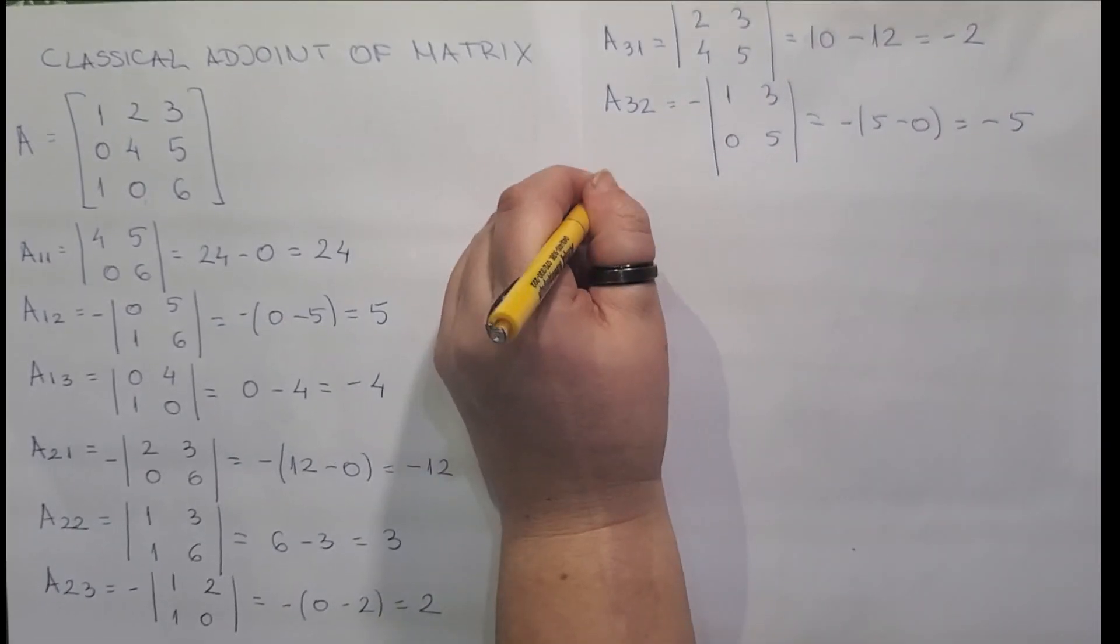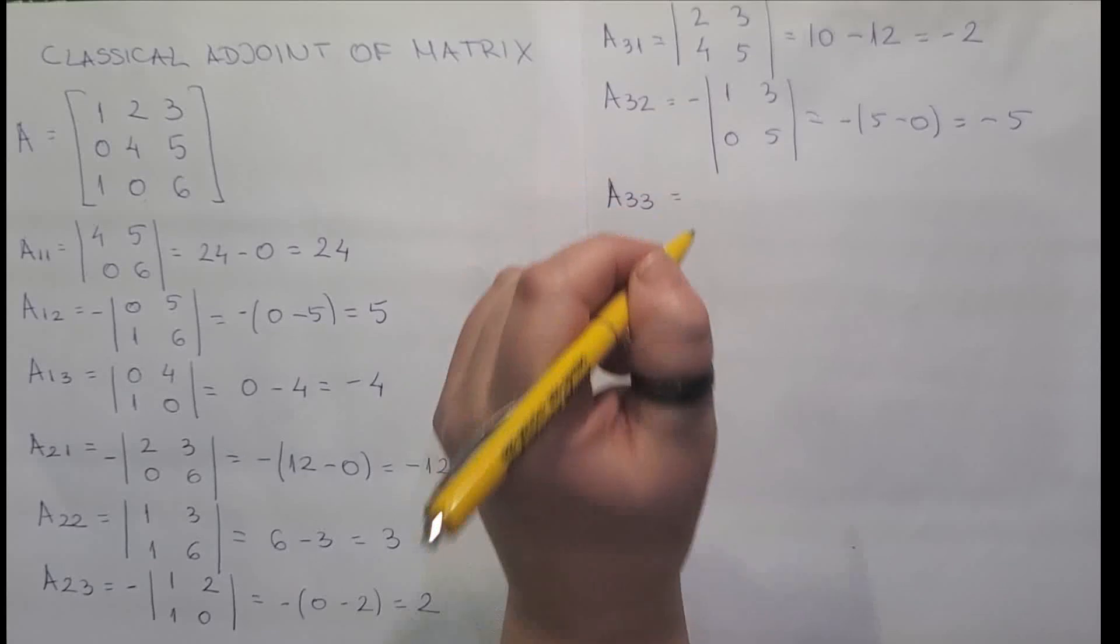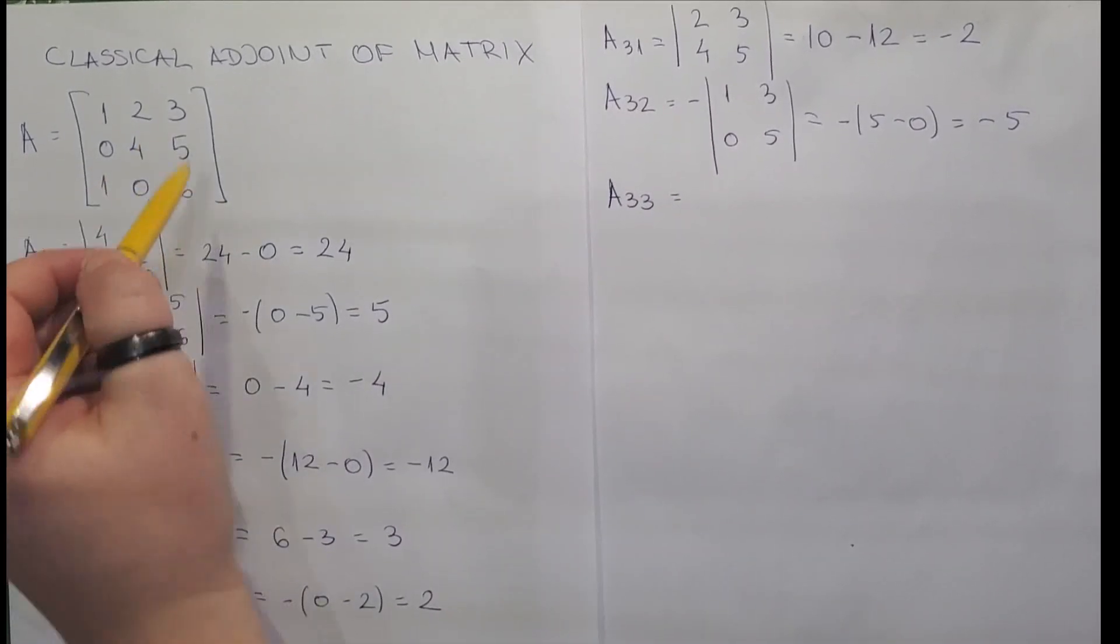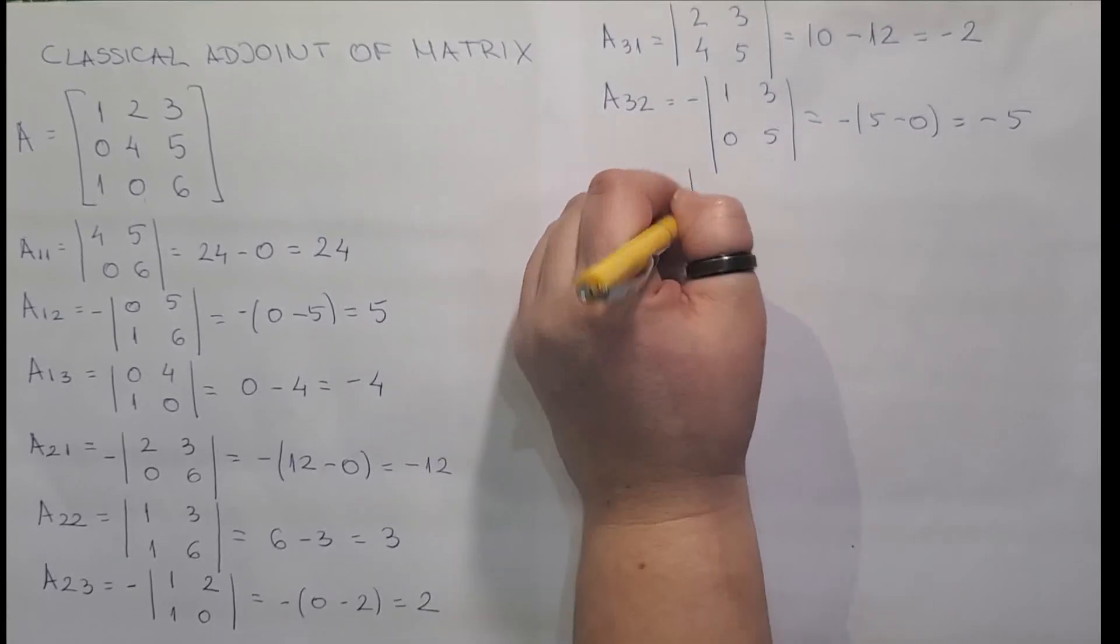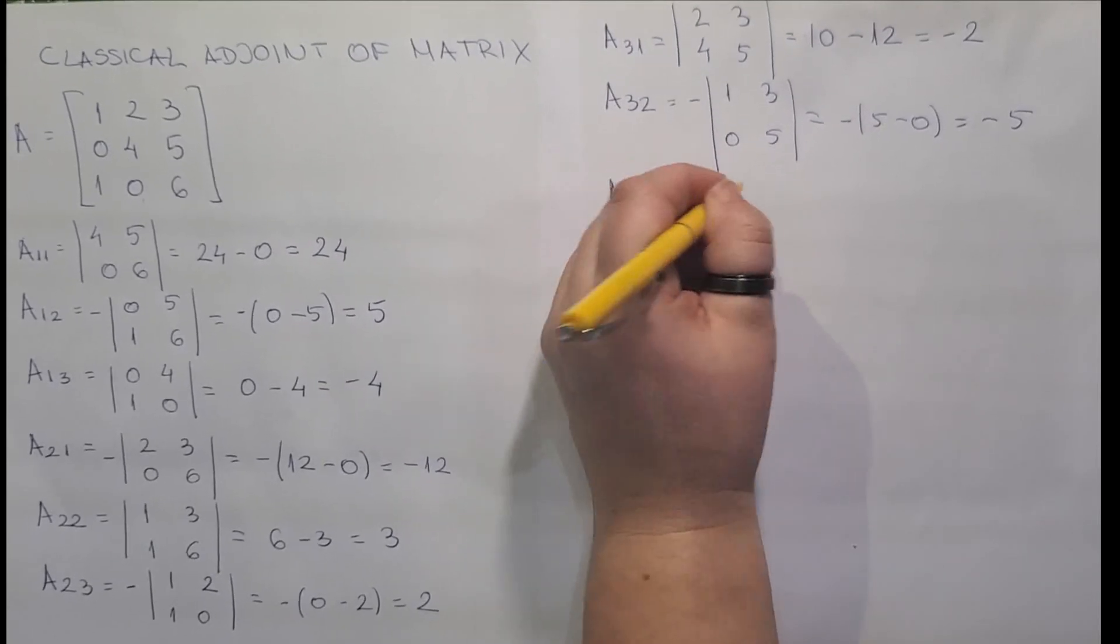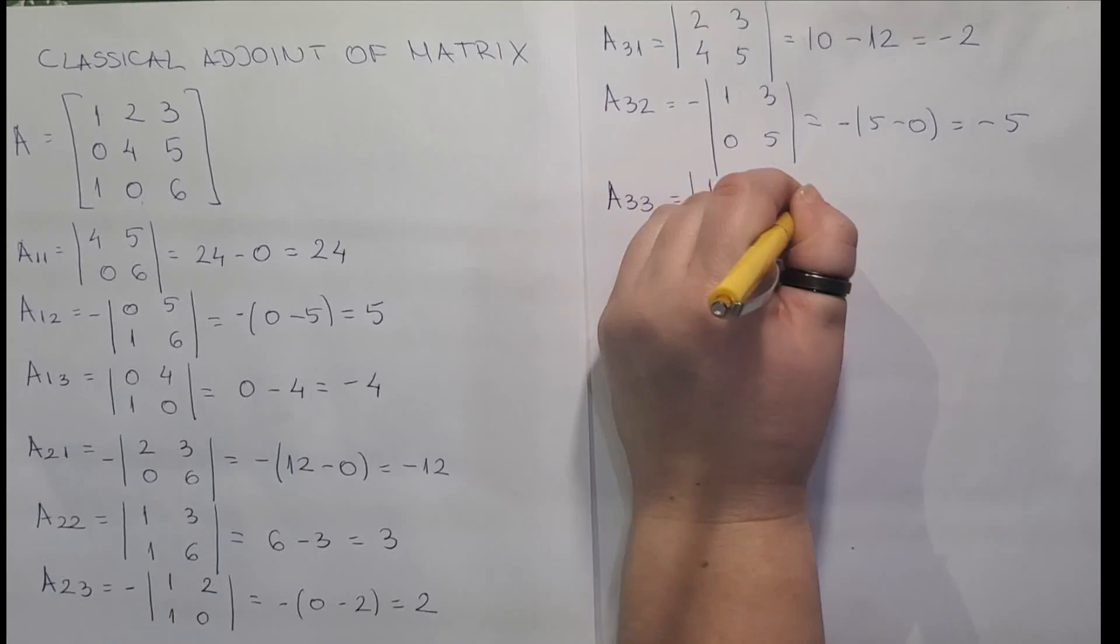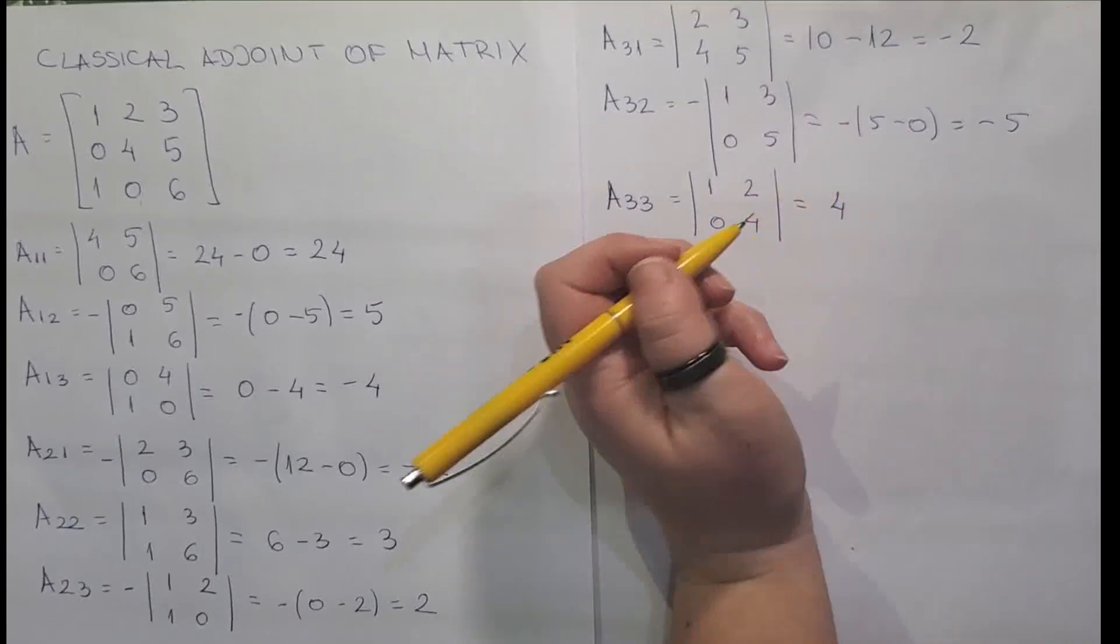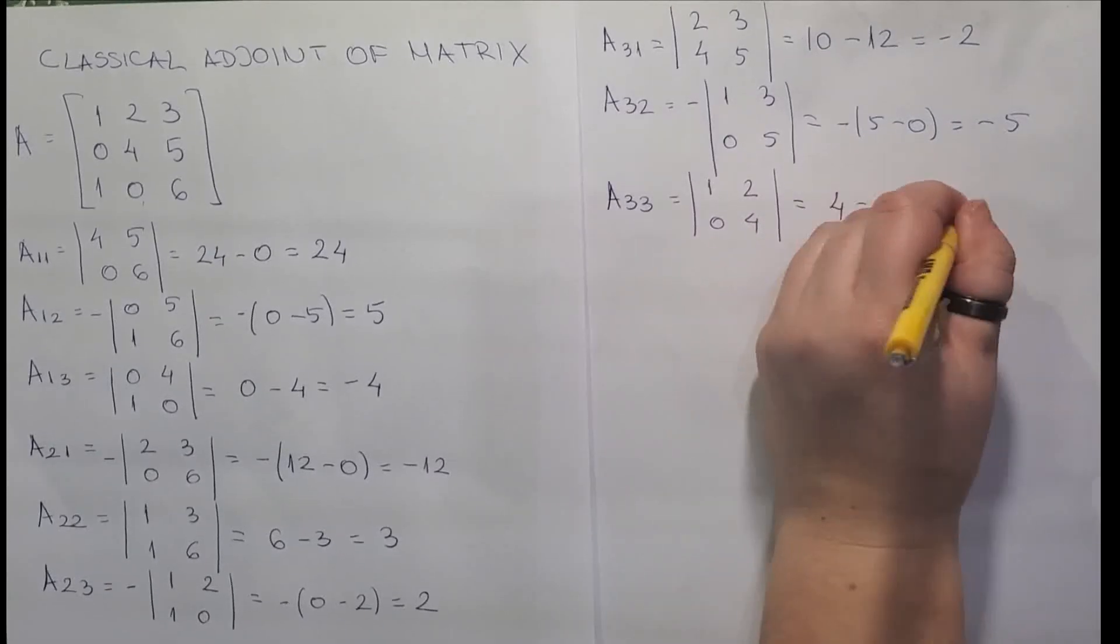And the last one is a33. For this element, we are eliminating row number 3 and column number 3. And we have left with 1, 2, 0, 4. And this one equals to 1 by 4 is 4 minus 0 equals to 4.